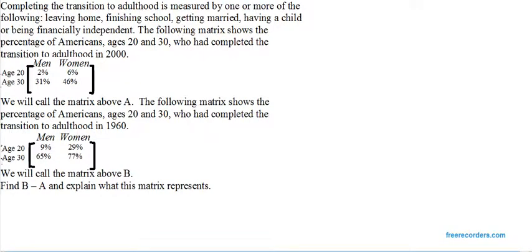The following matrix shows the percentage of Americans ages 20 and 30 who had completed the transition to adulthood in 2000.